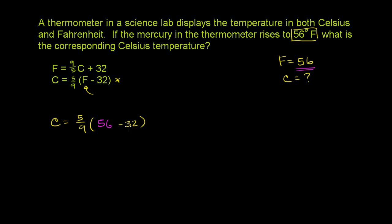56 minus 32 is 24. So this is going to be equal to 5 ninths times 24. And this is the same thing as 5 times 24 over 9. We can divide the numerator — before I even multiply out 5 times 24, we can divide the numerator and the denominator by 3.